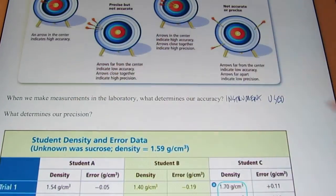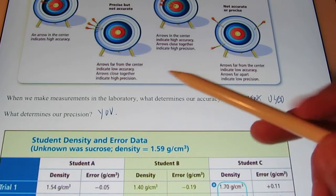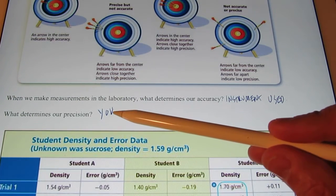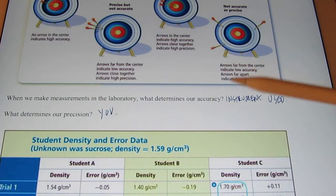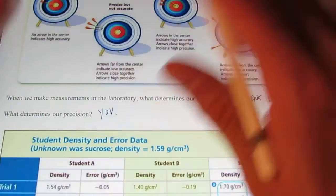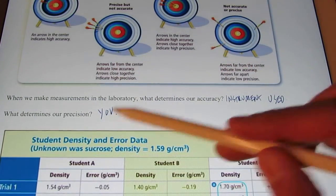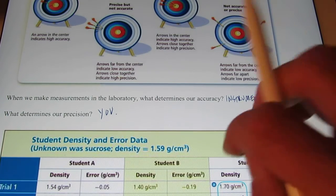Now, the precision is determined by you and how well you use that measuring instrument. So if you carefully make the measurement each time, the same way, you should be precise. If you're sloppy when you make your measurements, then the precision will be off. So you determine the precision. The accuracy is determined by the instrument that I'm allowing you to use.